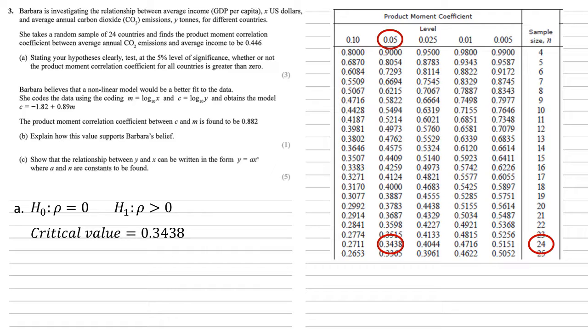She has found that the product moment correlation coefficient is 0.446. Well, that's larger than our critical value of 0.3438. So therefore, there is evidence that the product moment correlation coefficient is greater than zero.